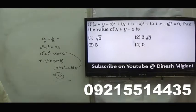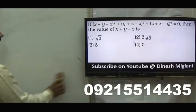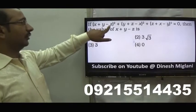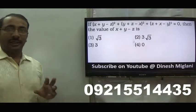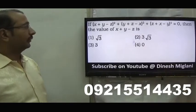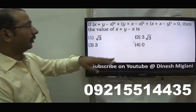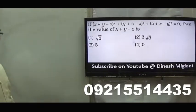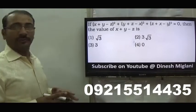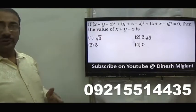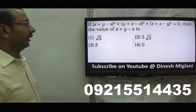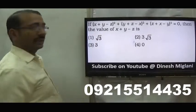x plus y minus z whole square, y plus z minus x whole square, and z plus x minus y whole square equal to 0. All three terms have power 2, so all are positive. Three positive numbers summing to 0 is only possible when all of them are 0. When we say all of them are 0, that means x plus y minus z equal to 0. There is no need to open the square. Hence, the answer is 0.